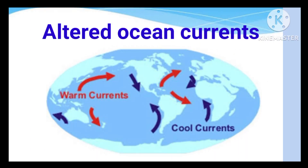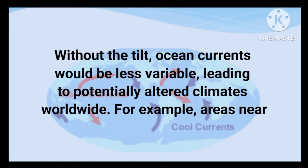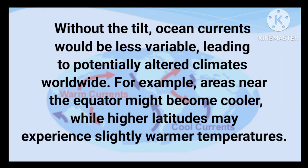The Earth's tilt influences the formation and movement of ocean currents, such as the Gulf Stream. Without the tilt, these currents would be less variable, leading to potentially altered climates worldwide. For example, areas near the equator might become cooler, while higher latitudes may experience slightly warmer temperatures.